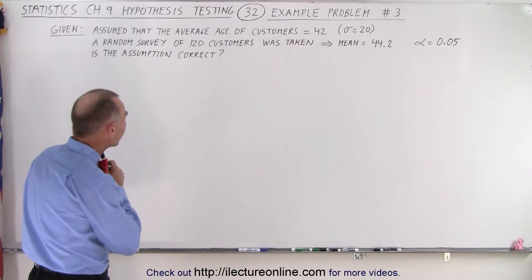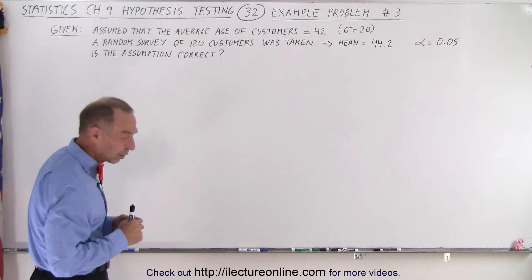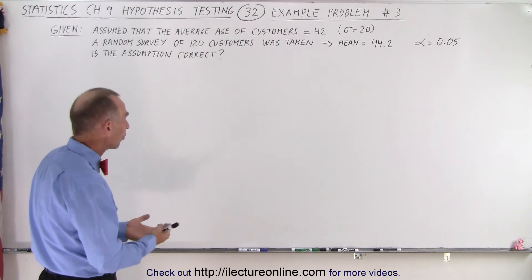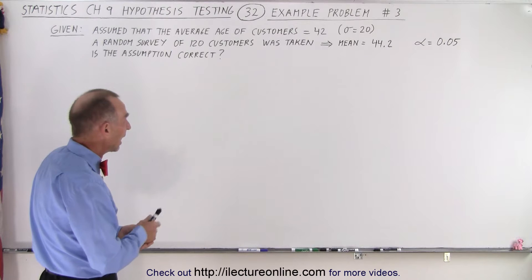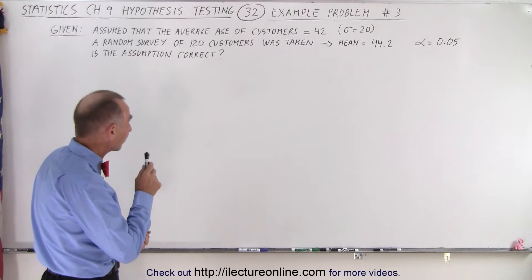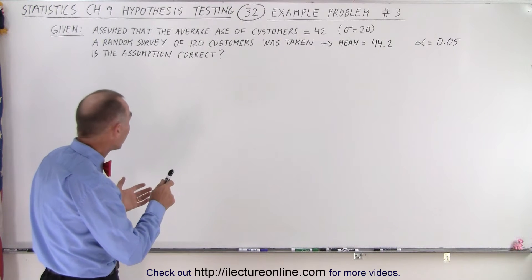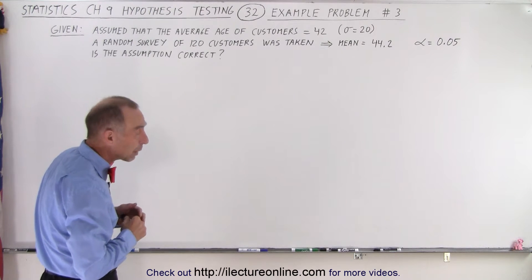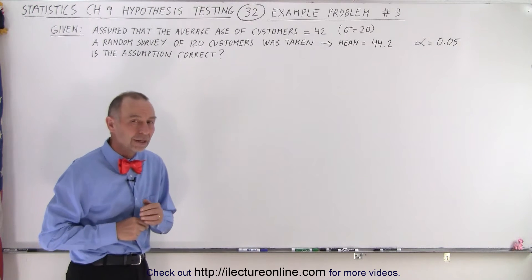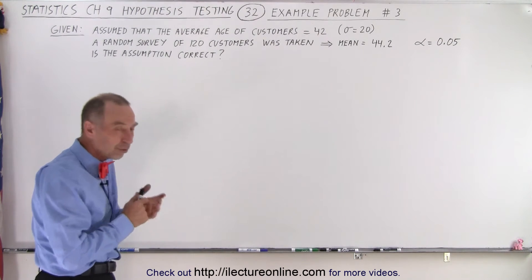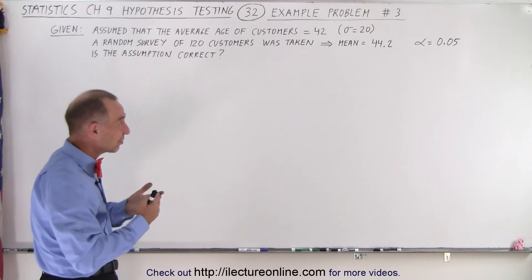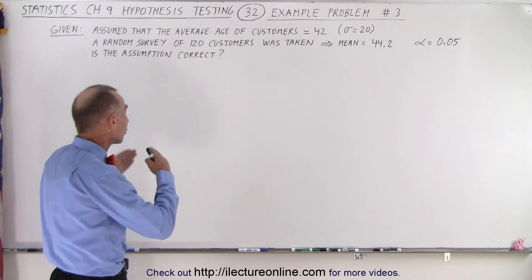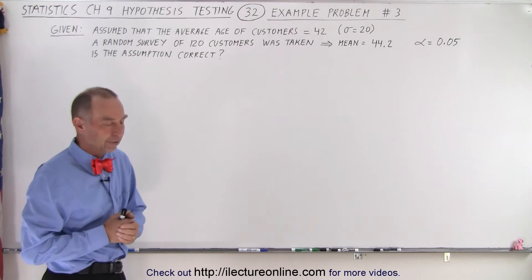A random survey of 120 customers was conducted to see if that assumption is correct. In that sample of 120 customers, the mean was 44.2. We want to have a level of significance of 0.05, which means a 95% confidence level, to determine whether our assumption is correct or not.